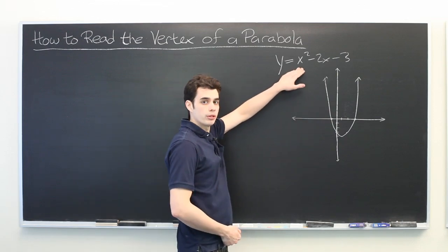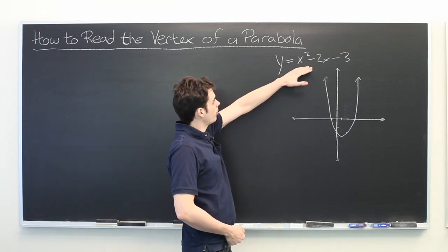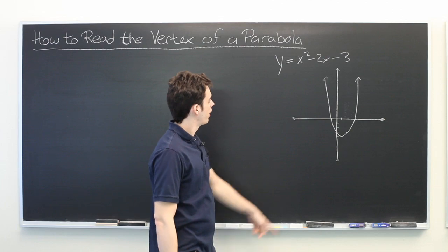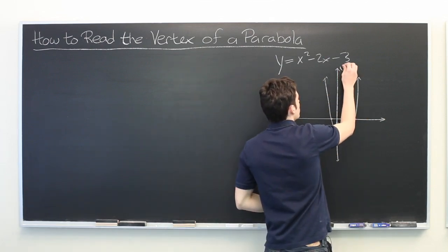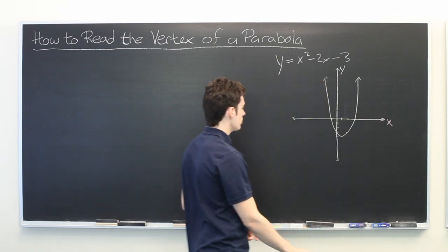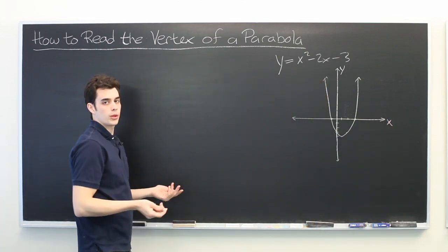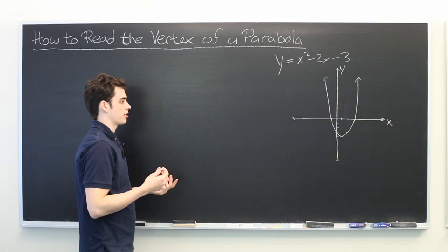So here we have a polynomial given by y equals x squared minus 2x minus 3, and here's its graph where this is our y-axis and this is our x-axis. Our question is: how can we quickly determine the vertex of this parabola?